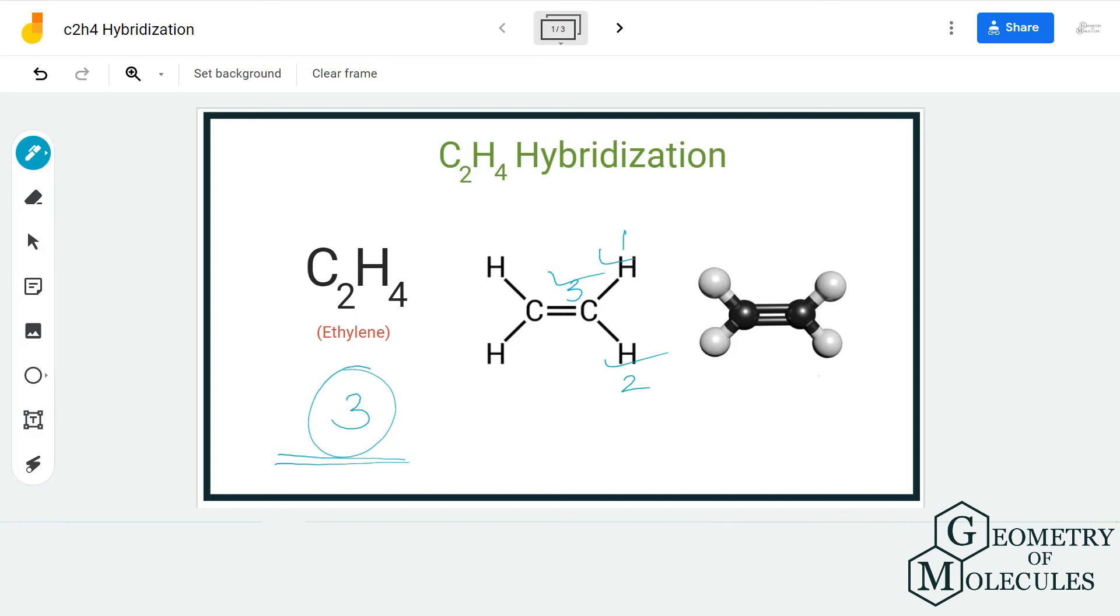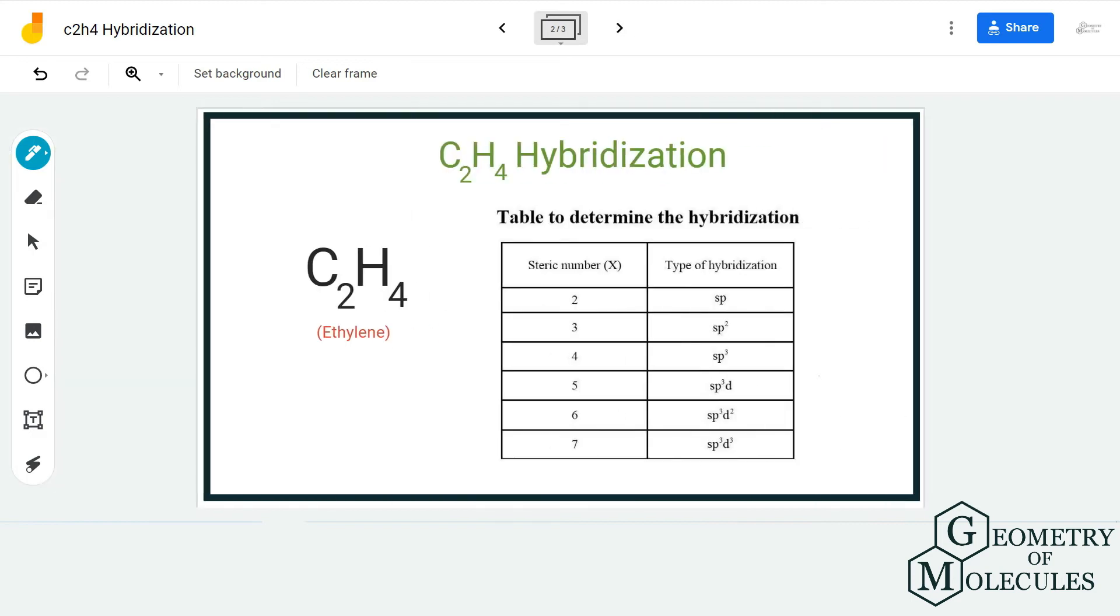As the steric number is three for this carbon atom, you can refer to this table which can help you determine the hybridization in under two minutes. The steric number is three, which corresponds to sp2 hybridization.